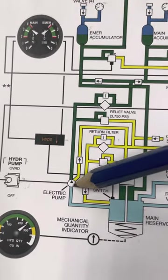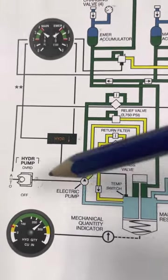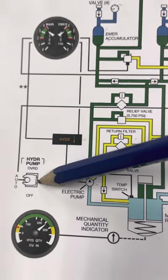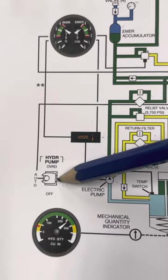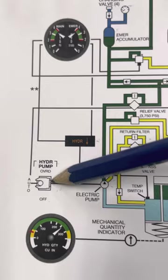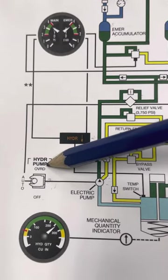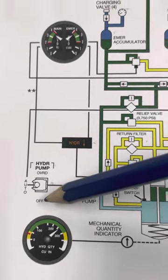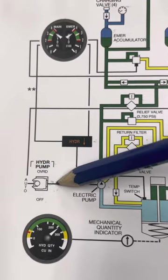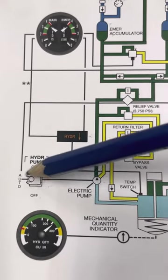That electric pump is operated by the switch on the top left corner of your pedestal. It's an off, auto, and override position on that hydraulic pump. Off, obviously off. Auto requires 28 volts. Notice it's guarded.